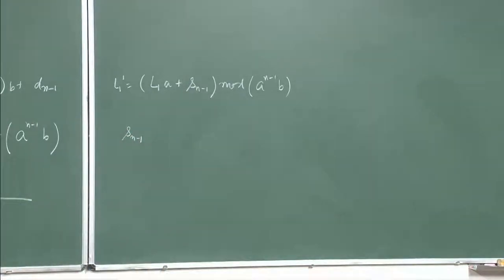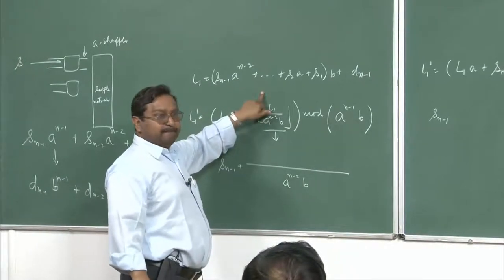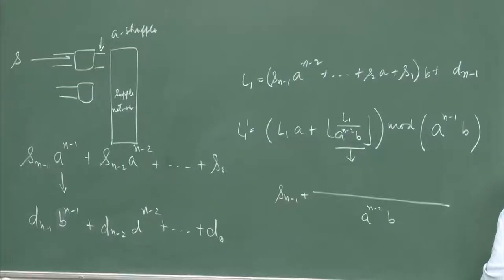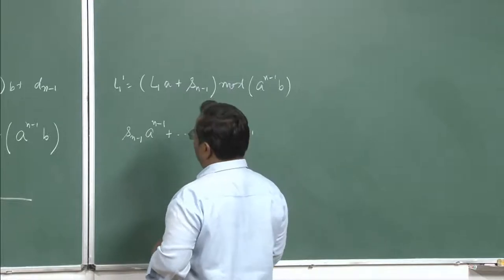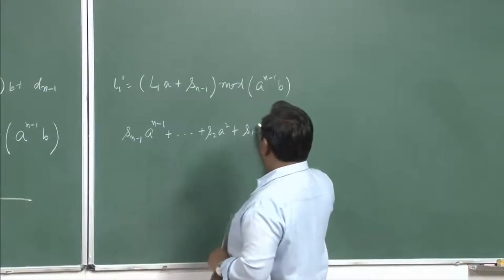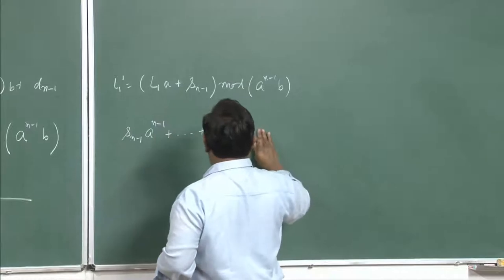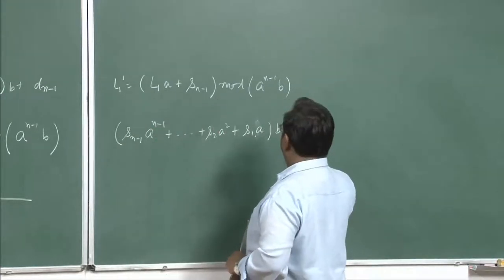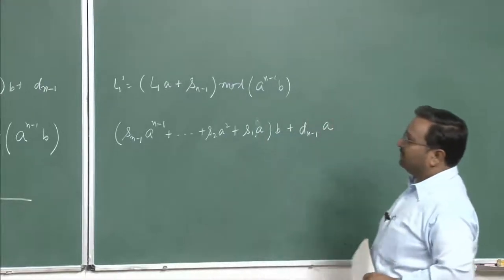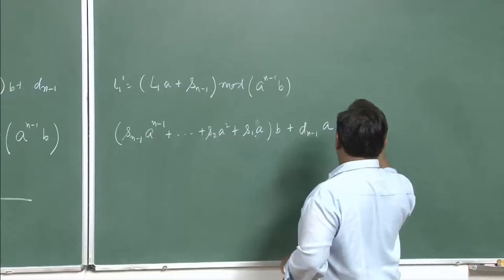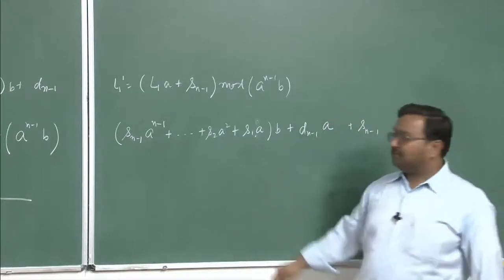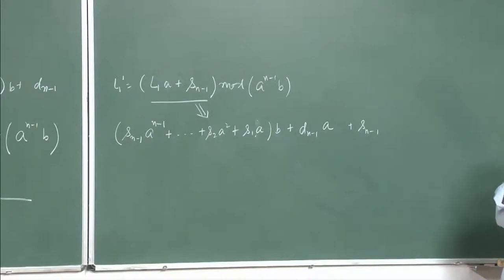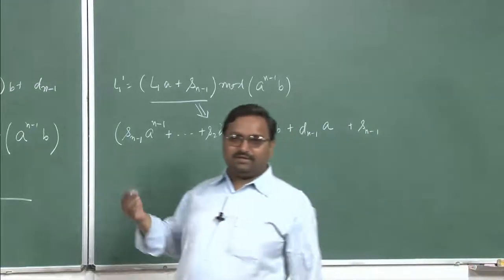So L_1 times a plus s_1 — what is L_1? L_1 has to be multiplied by a. So this will become s_n minus 1 times a^(n-1). I have multiplied by a already, now s_2 times a^2 plus s_1 times a. There is already a b in front. S_1 times a and ultimately s_n minus 1 will be there — that is a term which you have to essentially handle. Then by using a similarity principle following the same thing you come to the proof.